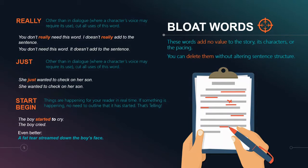Words like 'start' or 'begin' — timing words — are a lot of times more telling than they are necessary, and by removing them we can trim out that fat and make our sentences look cleaner. In our example, 'the boy started to cry' becomes 'the boy cried' — a little more active. If you want to take it further, you could say 'a fat tear streamed down the boy's face.' Now we know the boy is crying, but we've got a better visual to go along with that.